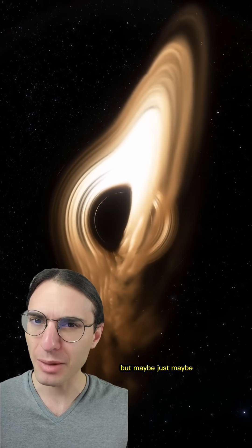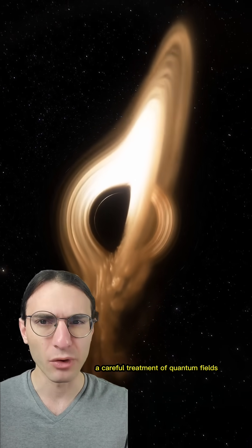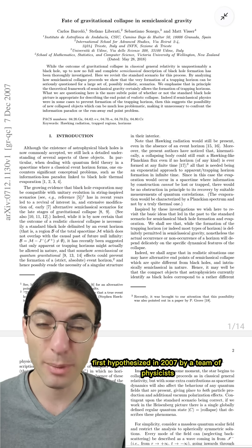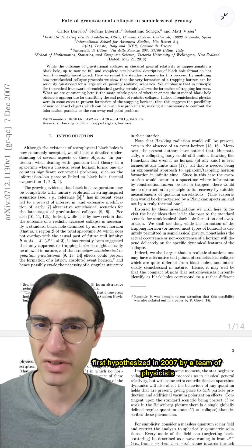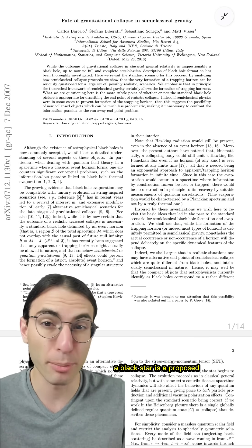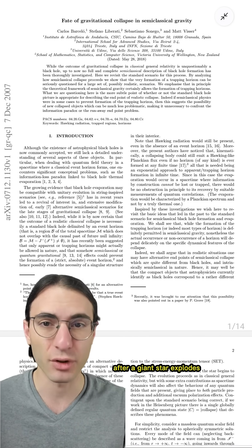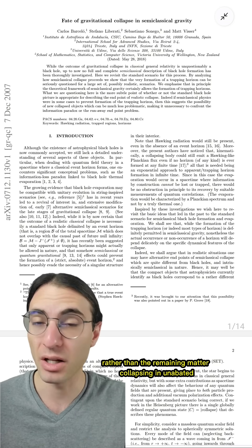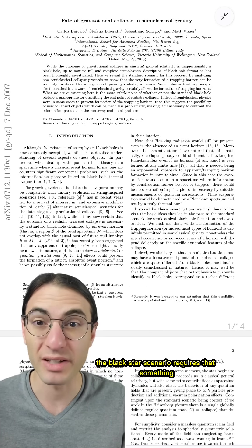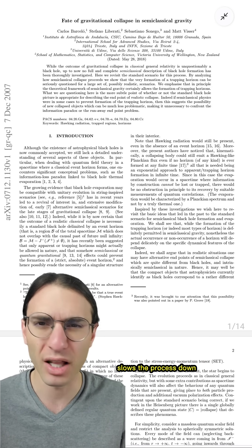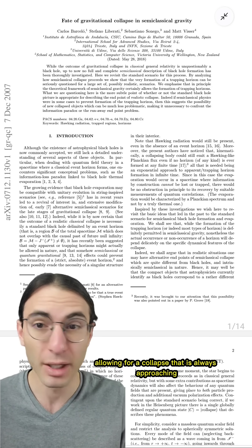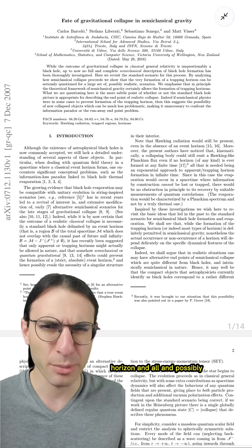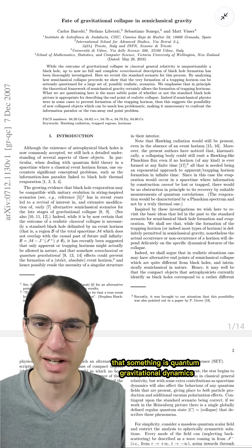But maybe, just maybe, a careful treatment of quantum fields makes all those problems go away. Enter black stars. First hypothesized in 2007 by a team of physicists, a black star is a proposed alternative to what's left behind after a giant star explodes. Rather than the remaining matter collapsing in unimpeded, the black star scenario requires that something slows the process down, allowing for a collapse that is always approaching but never reaching a black hole state — horizon and all. And plausibly, that something is quantum gravitational dynamics.